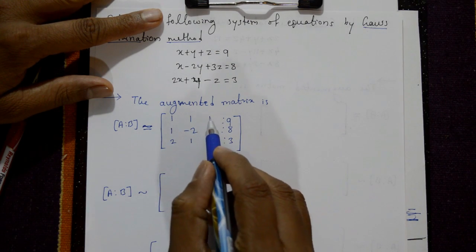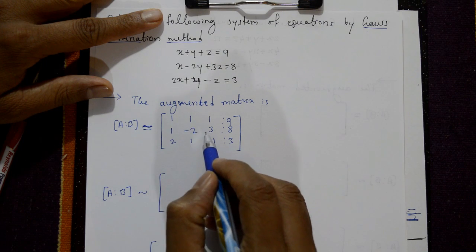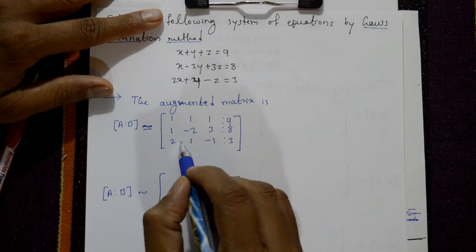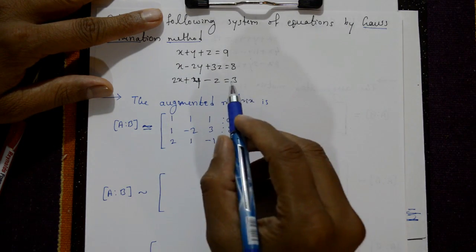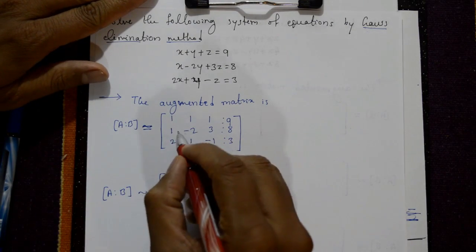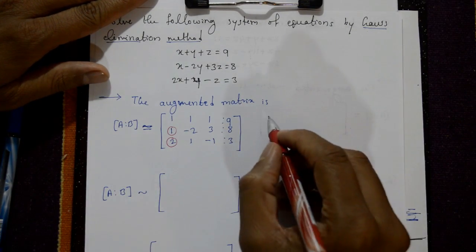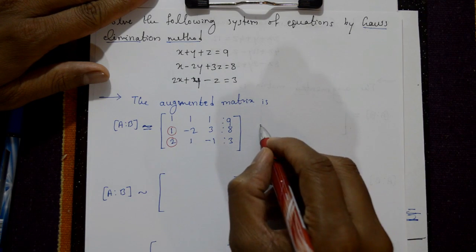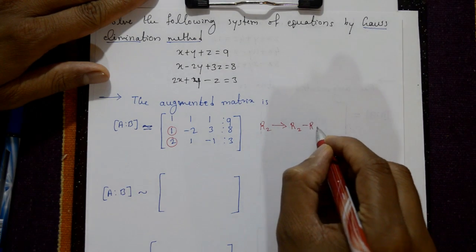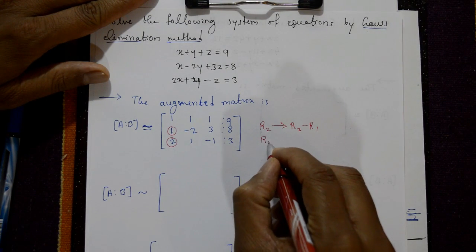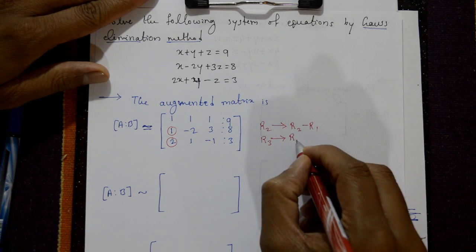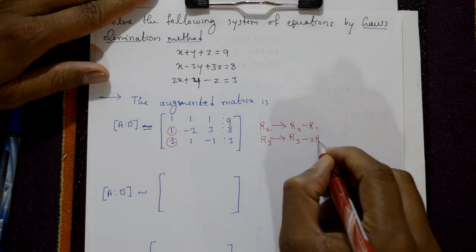This part is matrix A. We reduce it into the upper triangular matrix, meaning these lower three elements are made zero using row operations. The leading number is 1. We make the elements below it in R2 and R3 equal to zero. R2 is equal to R2 minus R1, and R3 is equal to R3 minus 2R1.